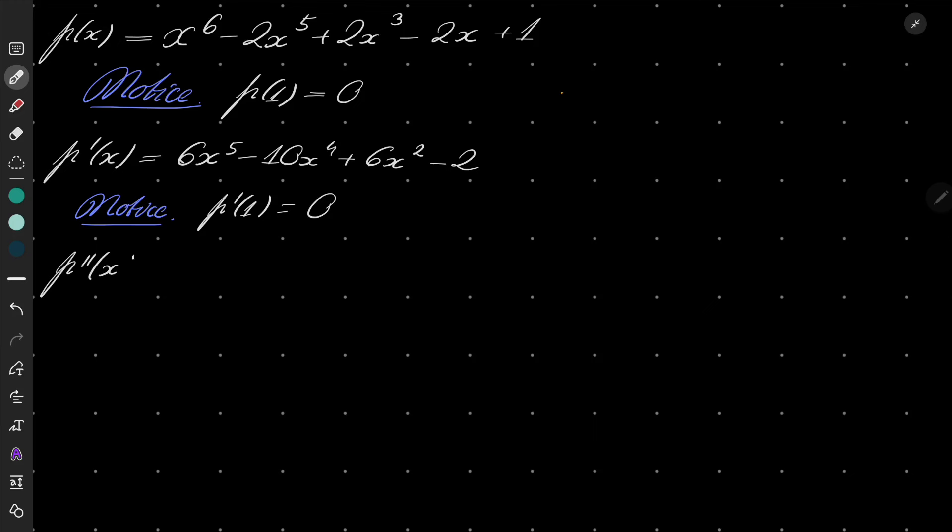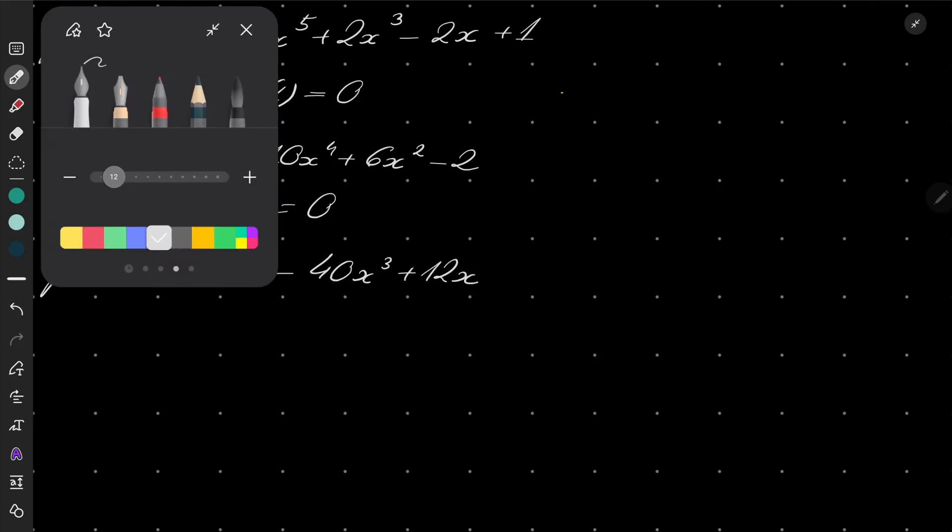I will also investigate the second derivative: 30x to the fourth power minus 40x cubed plus 12x. And now let's notice that...